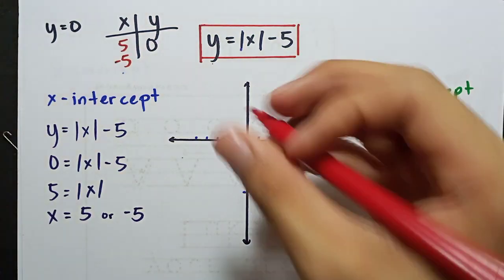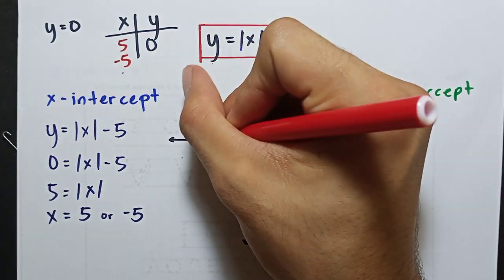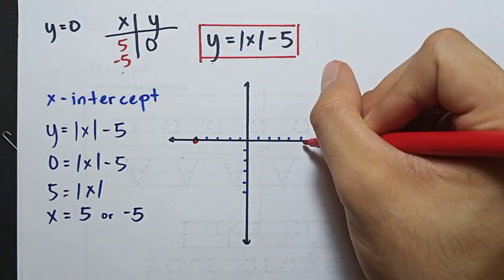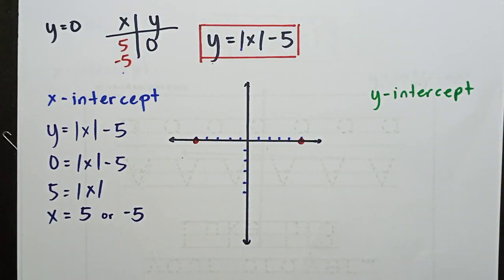So we have 5 or negative 5. Let's plot them now. 1, 2, 3, 4, 5. This is our negative 5. I'll mark it. This is also our positive 5.